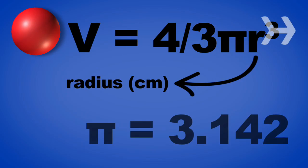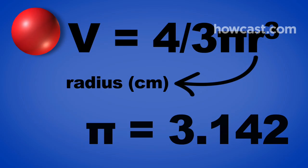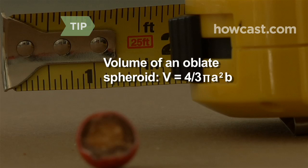Round pi to 3.142 if you don't have a scientific calculator. If the candies are oblate spheroids, use the formula v equals 4 thirds pi a squared b, where a is the longer radius and b is the shorter radius.